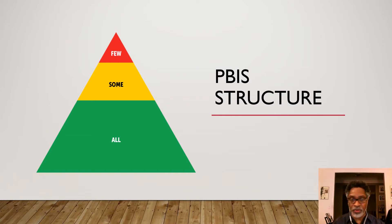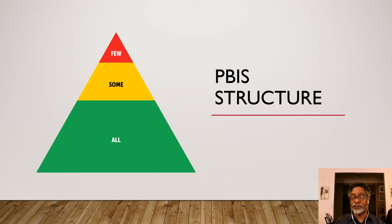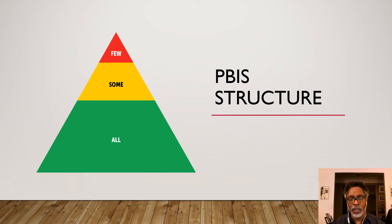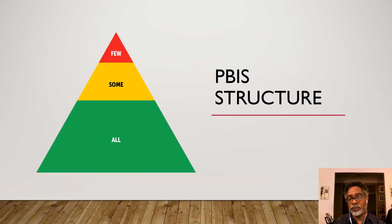The PBIS pyramid represents how school-wide PBIS operates. School-wide PBIS includes practices and strategies that involve all students — highlighted by the green part of the triangle. Then there are practices designed for some students, generally those for whom the generalized school-wide practices are not working. And there are targeted practices for the few students who experience significant behavioral issues. 'All' represents 100%; 'some' represents 5–20% of the student population; and 'few' represents about 1–5%.